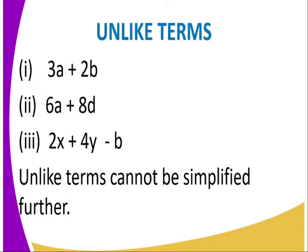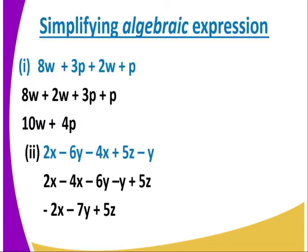We can have another unlike term which is 6a plus 8d. However, we have unlike terms which are a and d. Also, another example of unlike term is 2x plus 4y minus b. Here, the unlike terms are x, y and also b. And unlike terms cannot be simplified further. That is something that you should note.